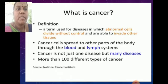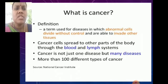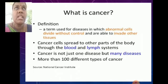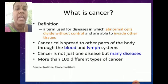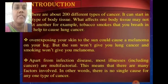It may spread to other parts of the body through the blood and lymph systems. Cancer is not just one disease but consists of many combined diseases — it has more than 100 different types of cancer.